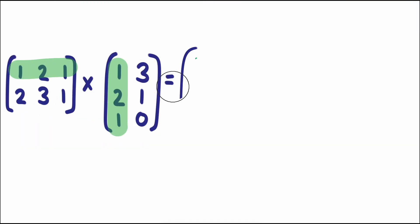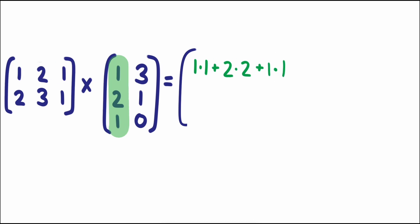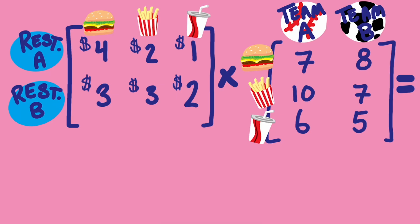This same process works for multiplying any two matrices. You can label the columns and the rows if it helps you to know the size of the final matrix and where each total value goes.